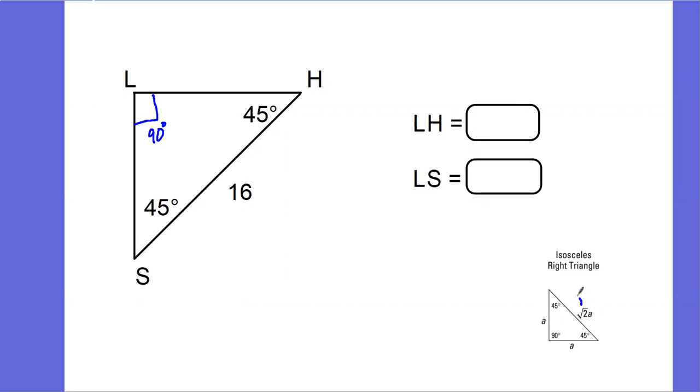So if I know my side that is across from my 90, I can just divide by the square root of 2, and that's going to give me my side across from my 45.